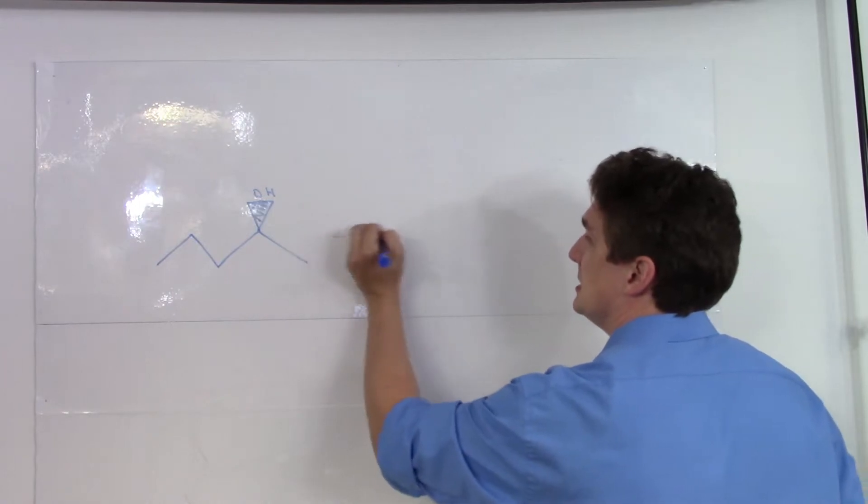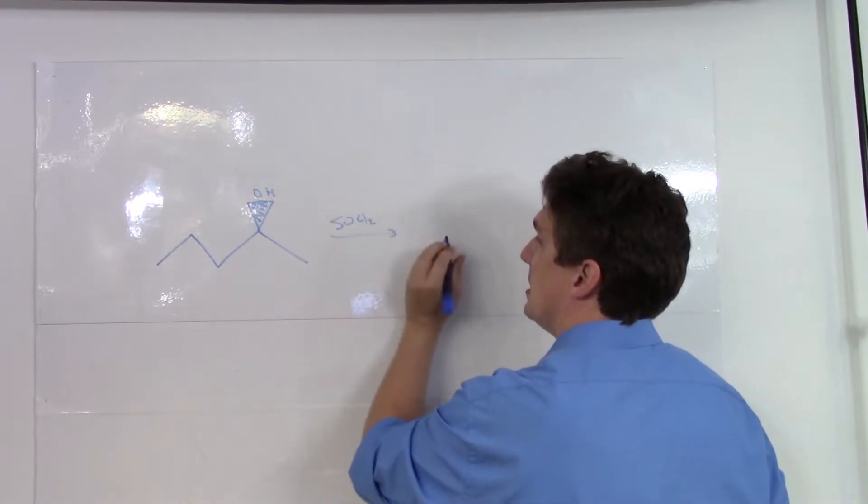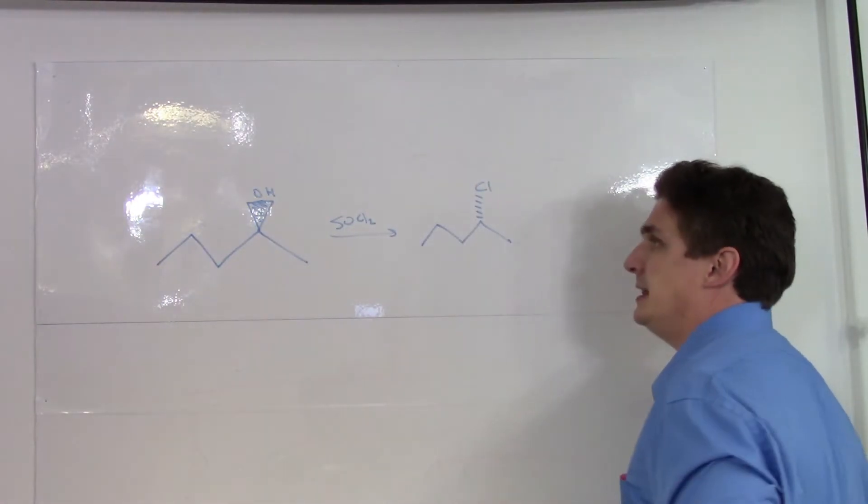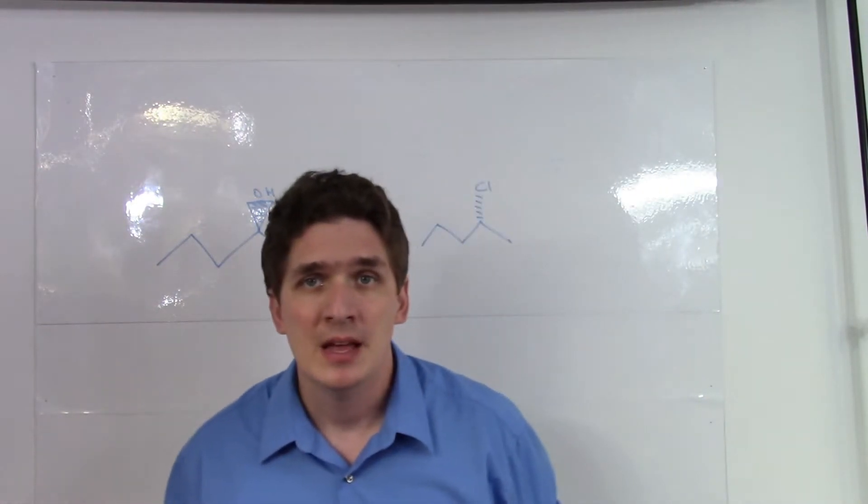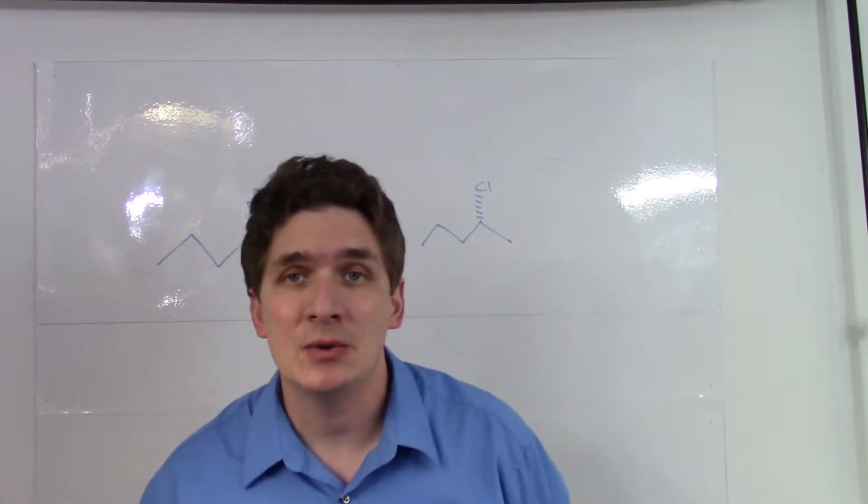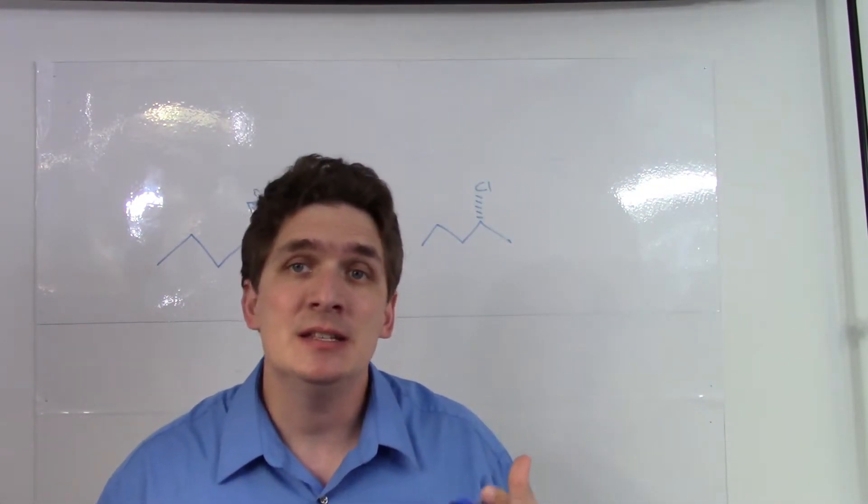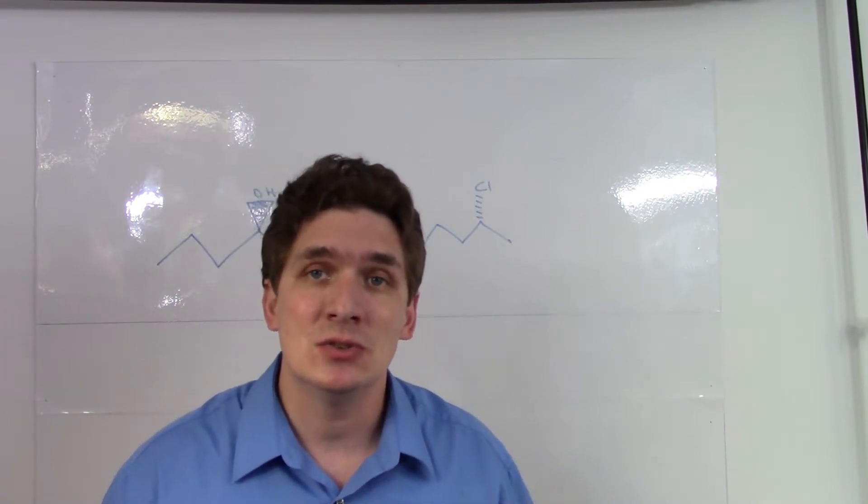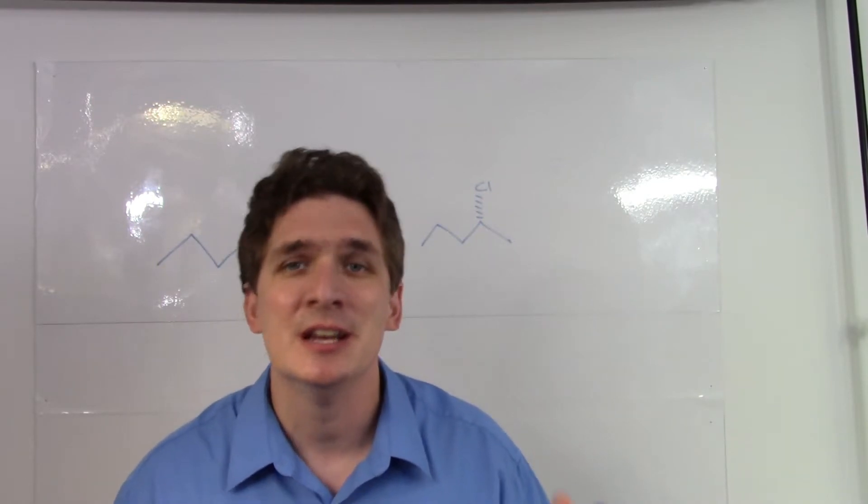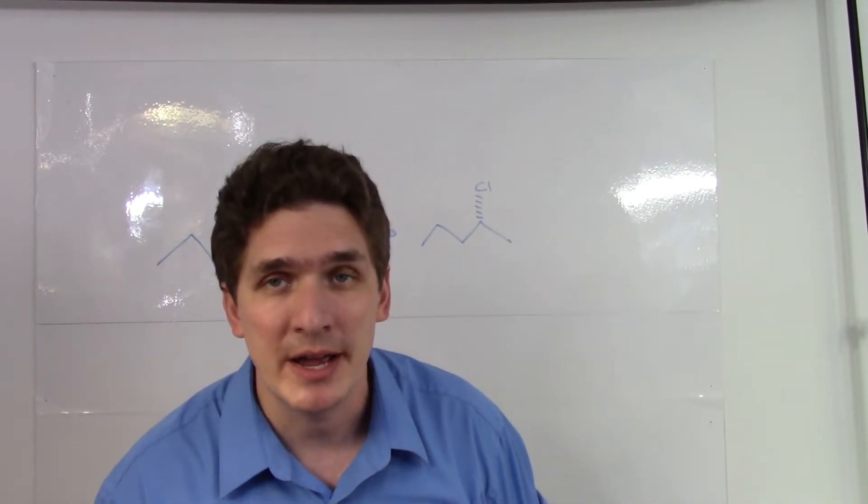If we were to do SOCl2 on this compound, we would get inversion of symmetry with halide substitution. And we can also do this on primary alcohols, which makes it a very versatile reaction because it means that we don't have to worry about SN1 rearrangements or the sluggishness of an SN2 reaction.